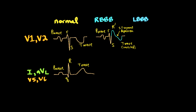There are also variations that can be confusing. The QRS complex with right bundle branch block in V1 and V2 can appear as an RR prime pattern rather than an RSR prime. In this case, the LV free wall forces don't descend past the isoelectric line, so the S wave doesn't show itself before the R prime from the right ventricle free wall forces appears.